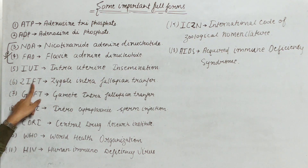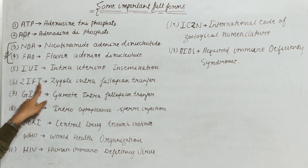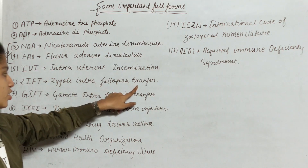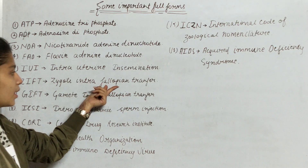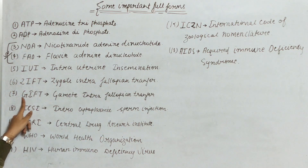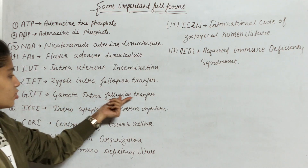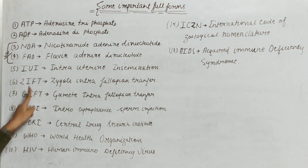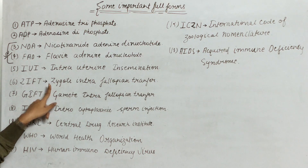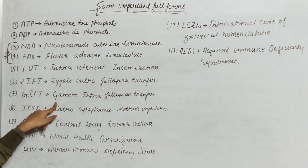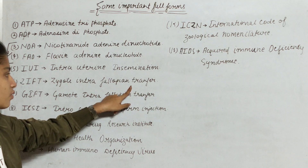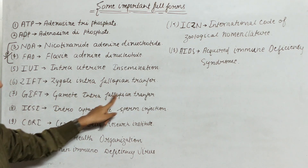Next is ZIFT — this is also very important. ZIFT full form is Zygote Intra Fallopian Transfer. I stands for Intra, F for Fallopian, and T for Transfer. Next is GIFT — Gamete Intra Fallopian Transfer. You can see ZIFT and GIFT differ only in Z and G: Z is Zygote and G is Gamete (in Hindi, Yugmanach). So ZIFT is Zygote Intrafallopian Transfer, and GIFT is Gamete Intrafallopian Transfer.